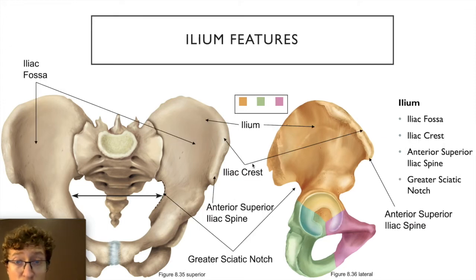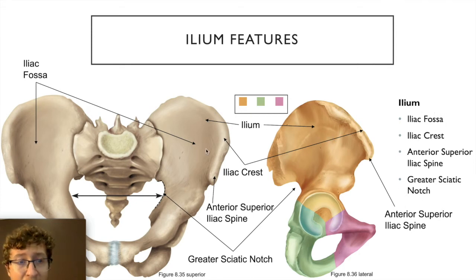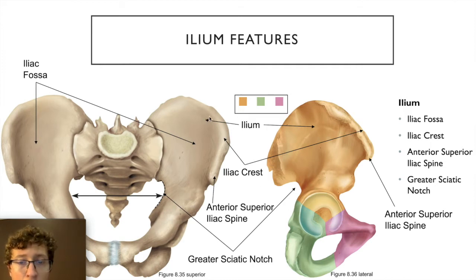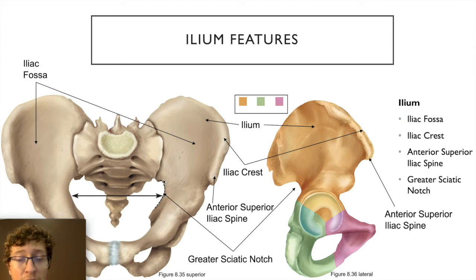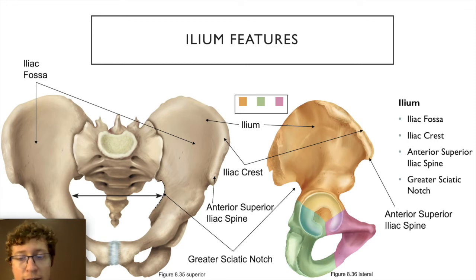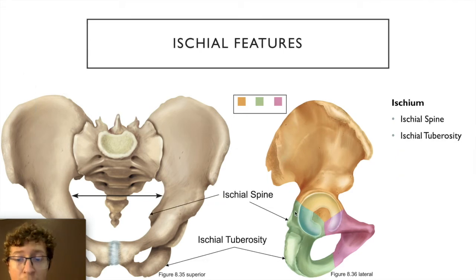Features of the ilium include: the iliac fossa, a smooth depression on the anterior side; the iliac crest, the top ridge; the anterior superior iliac spine, where the crest comes to a point; and the greater sciatic notch, a medial indentation through which the sciatic nerve passes to innervate the leg.